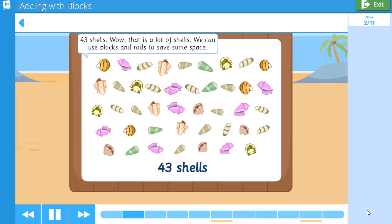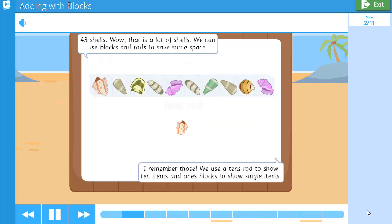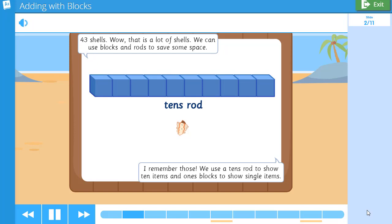43 shells. Wow, that is a lot of shells. We can use blocks and rods to save some space. I remember those. We used a tens rod to show 10 items and ones blocks to show single items.